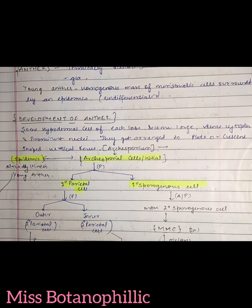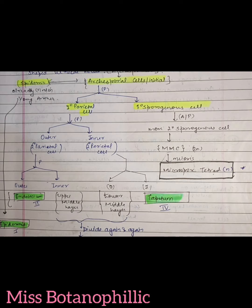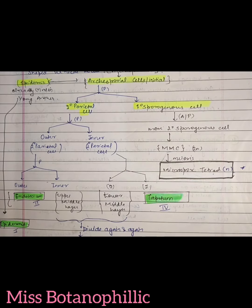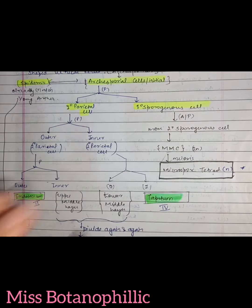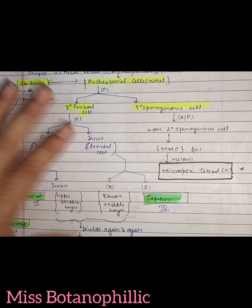After this development, I have given the process in a flowchart. If you want, you can read it in the theoretical way, which is easily available in books. But I have made a flowchart which will be helpful to understand. We have the archesporium cells or archesporium initials, and from these we will develop endothecium, tapetum, and middle layer. The epidermis is already present.